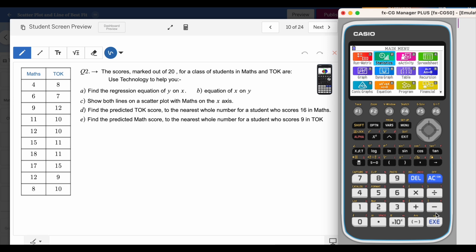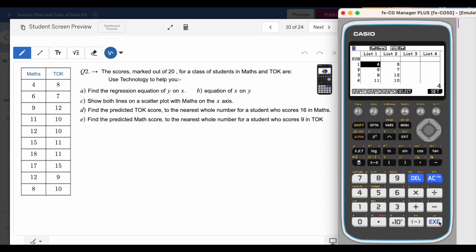You can see I'm going on statistics and I have already entered these values 4, 6, 9, 11, 12, 15, 18, etc. And on list number two, I have TOK scores. If you read very carefully, it will be mentioned in your question as well that your maths must be on x axis and TOK on the y axis. Generally it is mentioned in the IB. That's what I am assuming right now that maths is my x and TOK is my y.